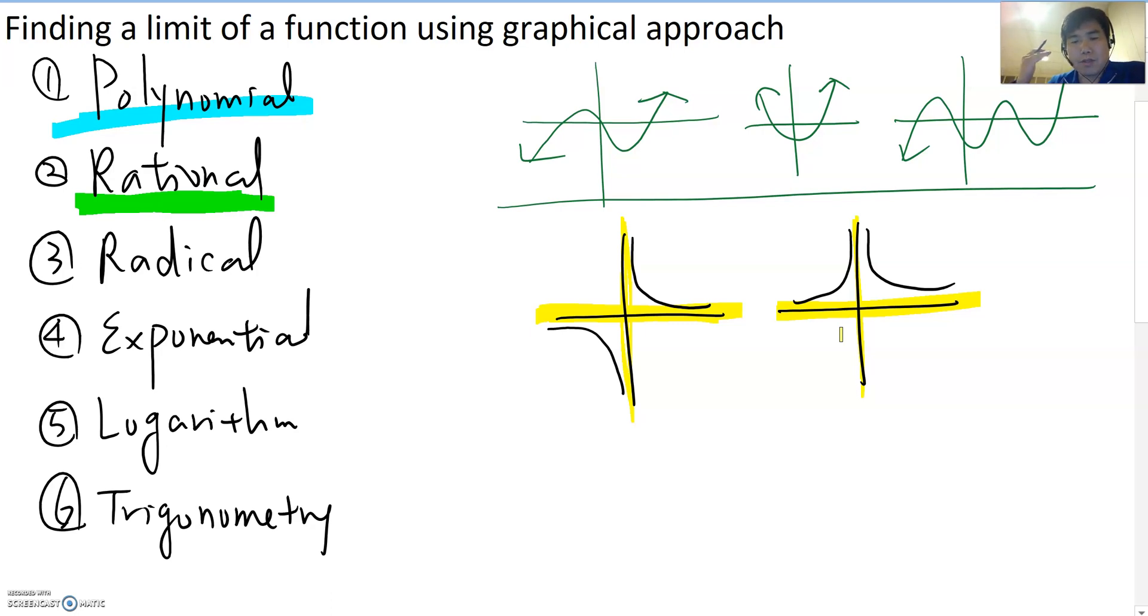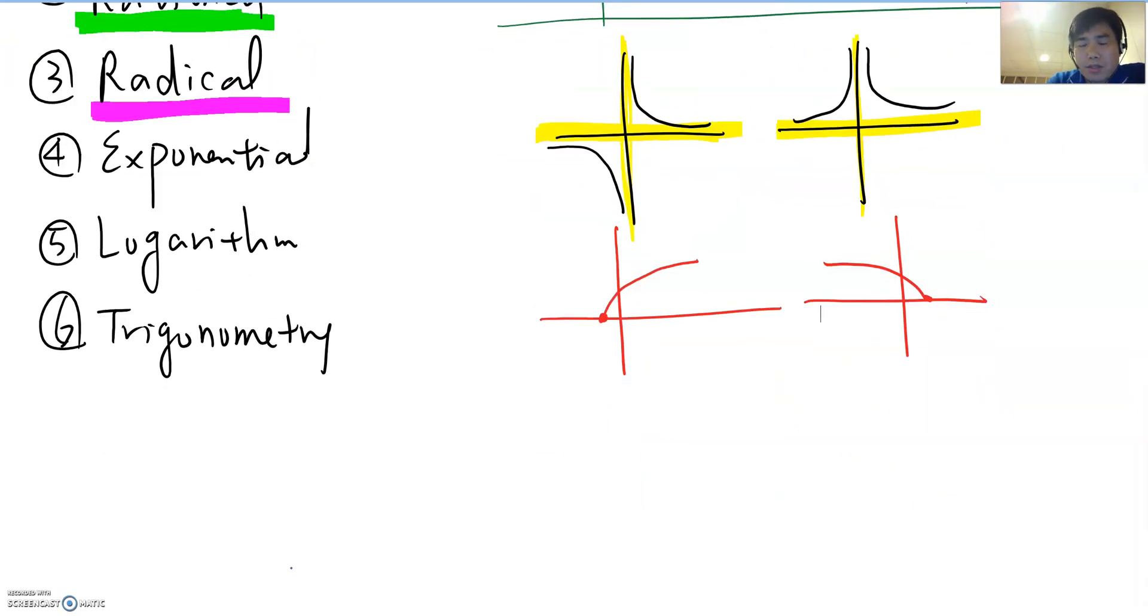And now third one is the radical. The radical we can also think about two different types. One is even power such as square root, fourth root like that, then it has starting point and they're going toward that positive or negative direction. But you know the degree is odd such as a cubic root and fifth root like that, then graph shape becomes continuous function like that.